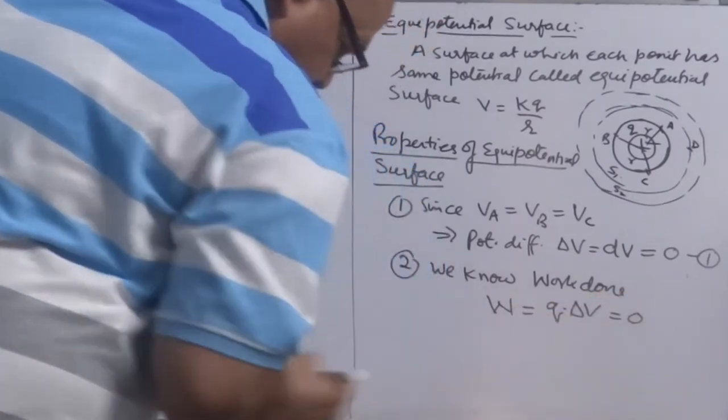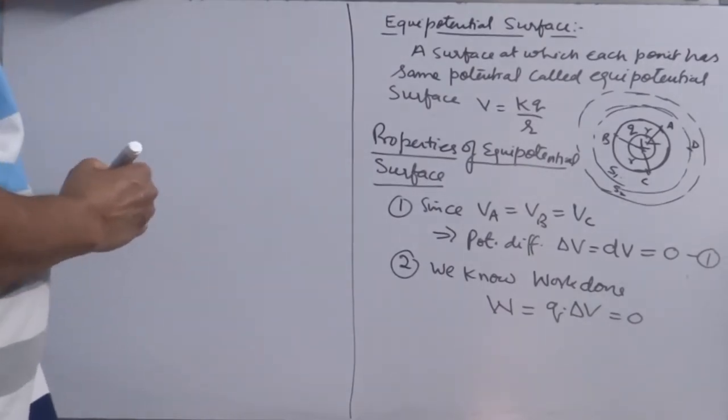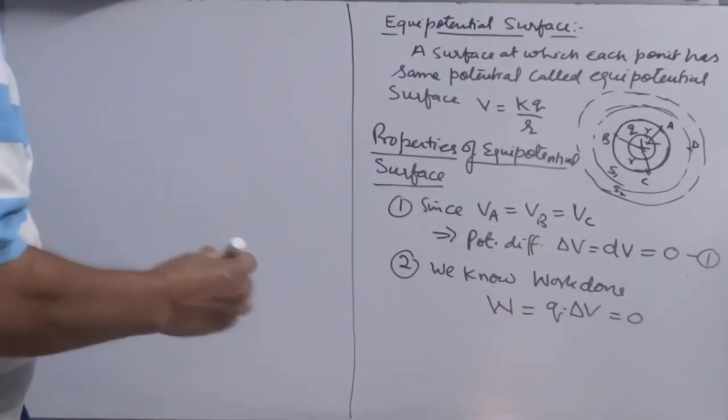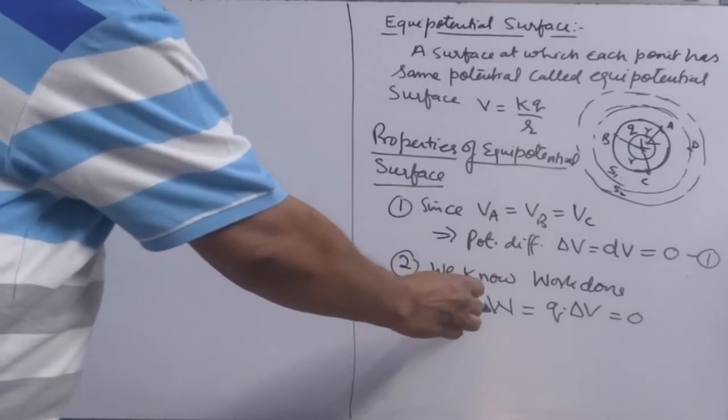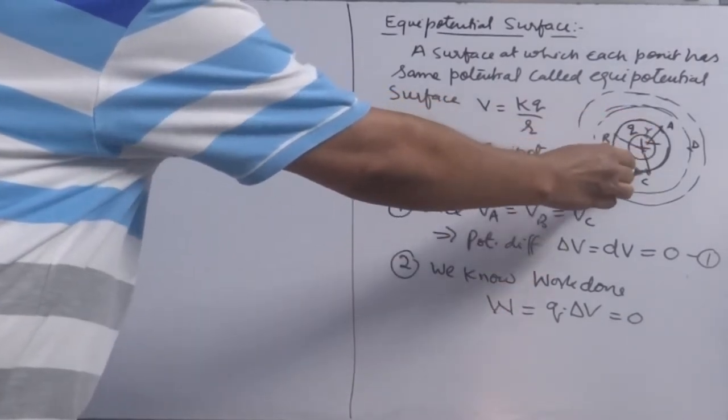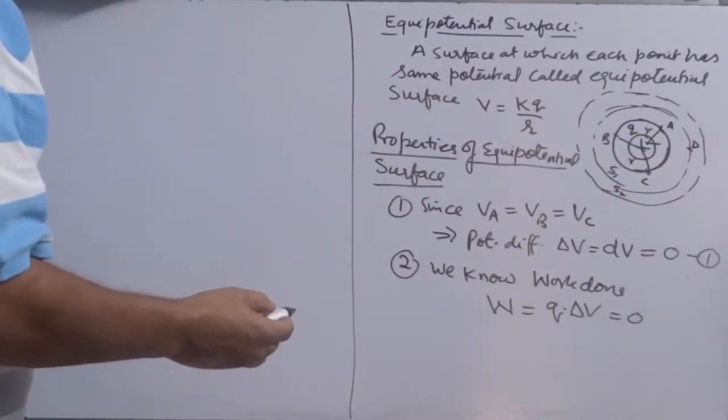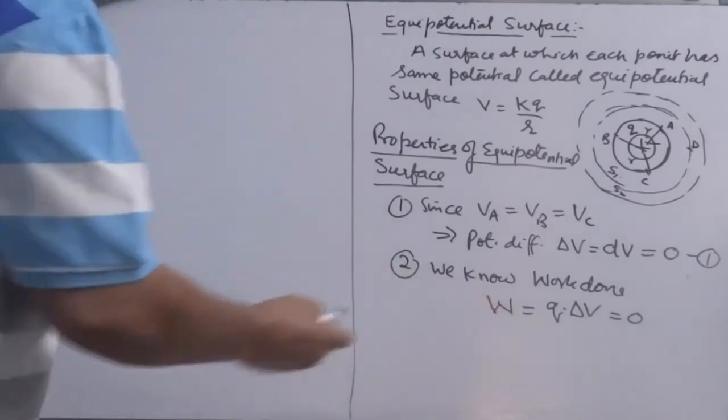W is equal to Q into potential difference. So, this is also 0. So, this is second property you can easily define that work done in moving any point charge in between two points lying on equipotential surface is always equal to 0.